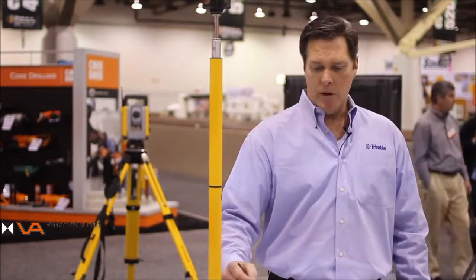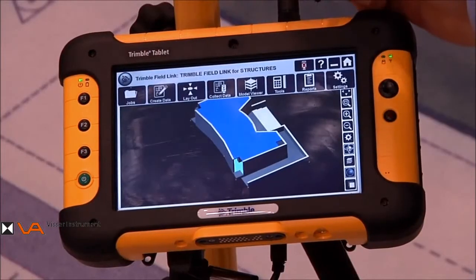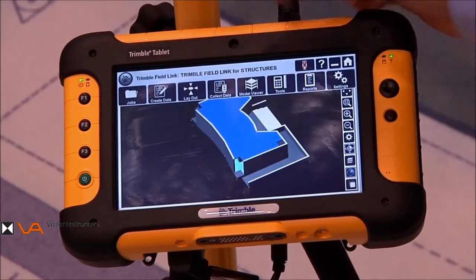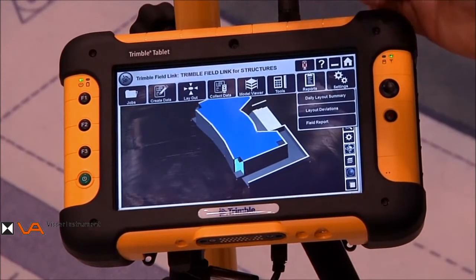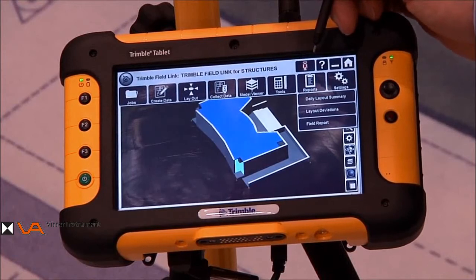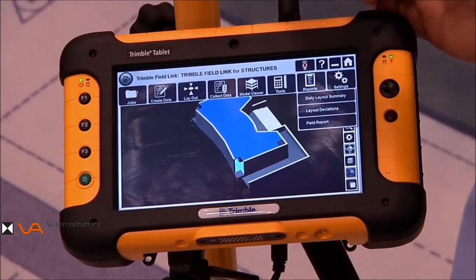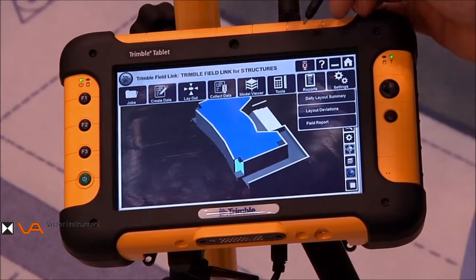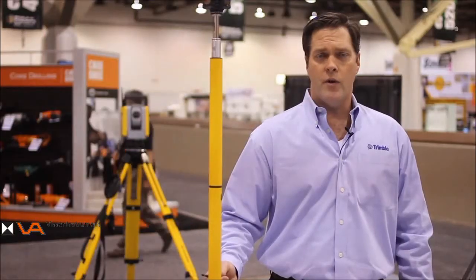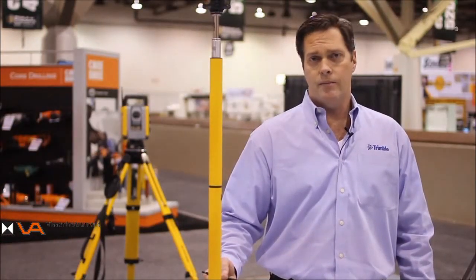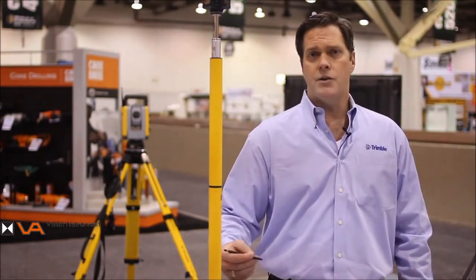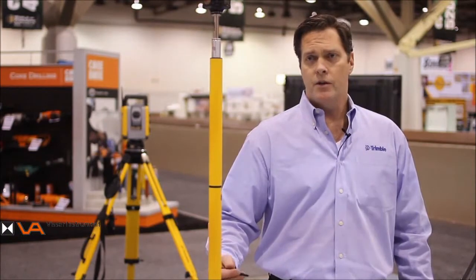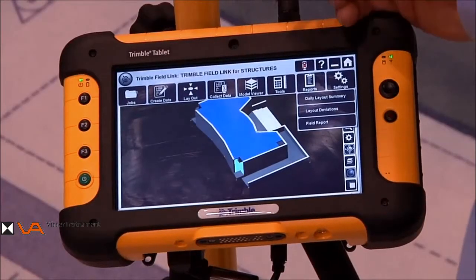The next step, and probably one of the most important features, are the reports. Again, we access that through the Trimble ribbon by tapping reports, and we have three different reports that we can choose from. We can choose the daily layout summary, which gives us information including when we started our layout for the day, when we finished it, how many points we laid out, how many were intolerant, how many were out of tolerance, so that we can calculate our performance metrics for the day.